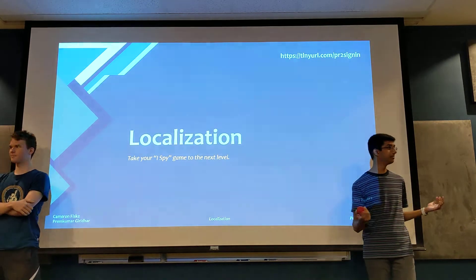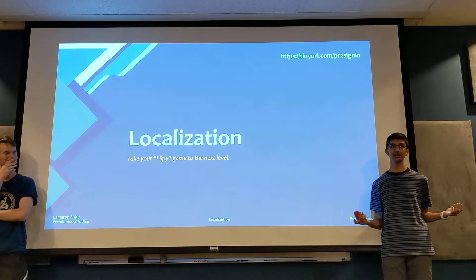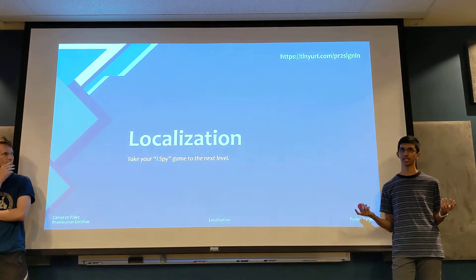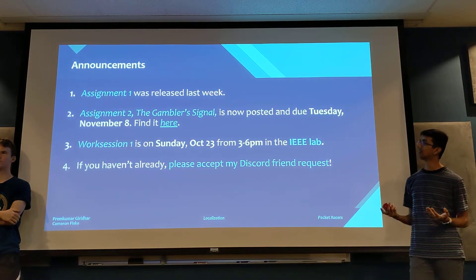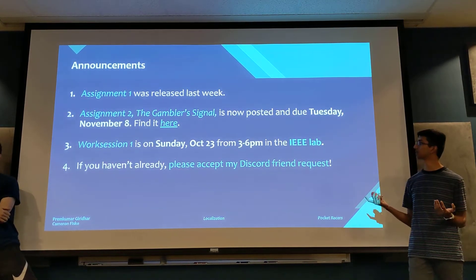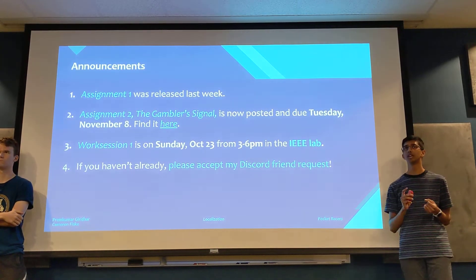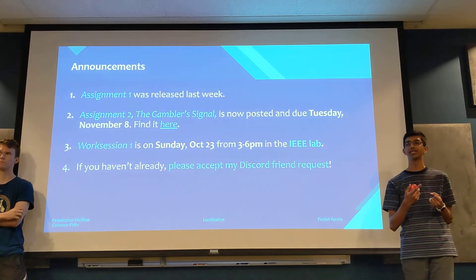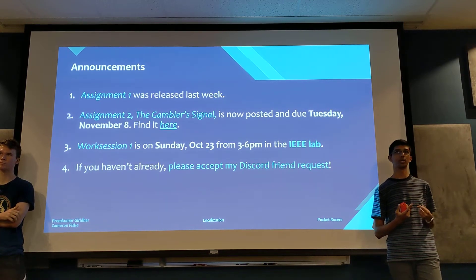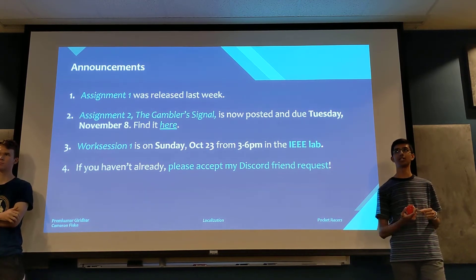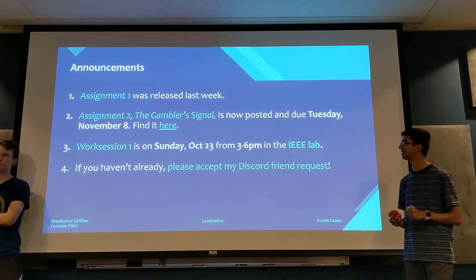Welcome everyone to lecture two on localization. We're basically going to be teaching you how to make a car finally actually see things. A few announcements: assignment one was released last week. Assignment two, the Gambler's Signal, is now posted and due Tuesday, November 8th. You can find it on the slides. The first work session is on Sunday, October 23rd from 3 to 6 p.m. in the IEEE lab. Also, please accept my Discord friend request — I need to make group chats with you all.